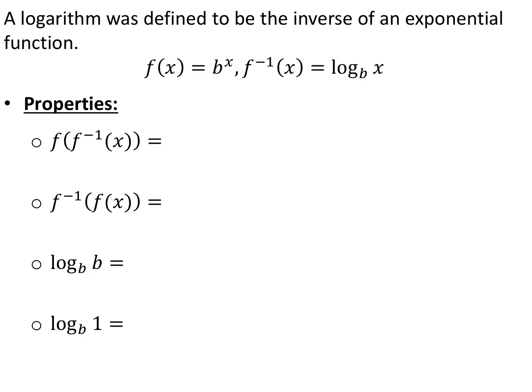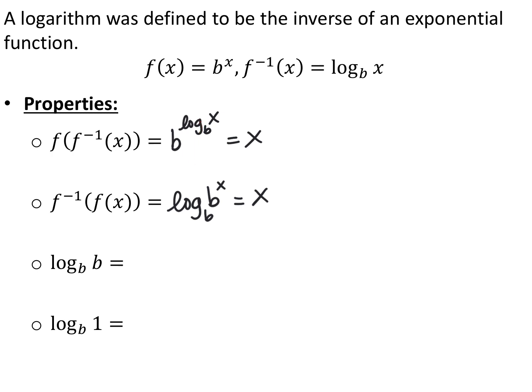Knowing these two functions are inverses of each other can help us with some properties. We'll assume f of x equals b to the x, and f inverse is log base b of x, and compose them both directions. When I compose f with f inverse of x, every time I see x in b to the x, I replace it with log base b of x. So I get b to the power of log base b of x. Since composing inverses gives x, whenever you have a base raised to the power of a logarithm with the same base, those two cancel and you're left with whatever's inside the logarithm.